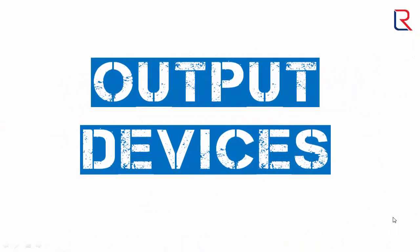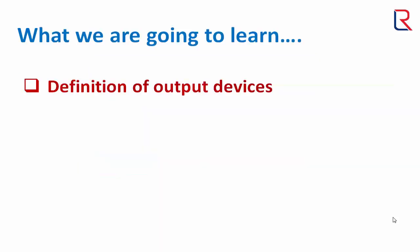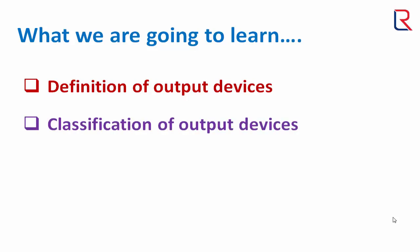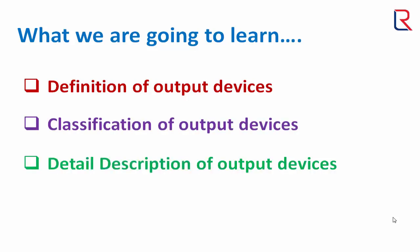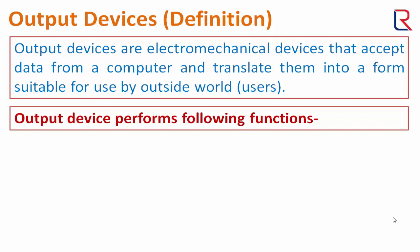Hello viewers, welcome to Learners Region. In this video we are going to learn the definition of output devices, classification of output devices, and detailed description of output devices. Now let's begin with the definition: output devices are electromechanical devices that accept data from a computer and translate them into a form suitable for use by the outside world.